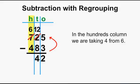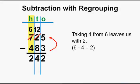In the hundreds column, we are taking 4 from 6. Taking 4 from 6 leaves us with 2. 6 subtract 4 equals 2.